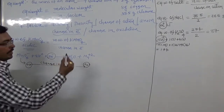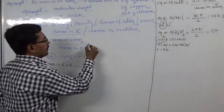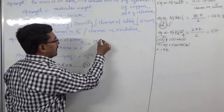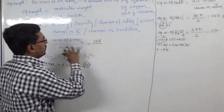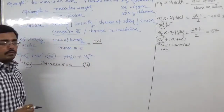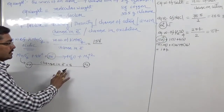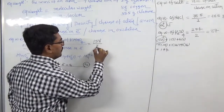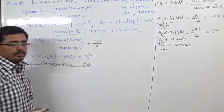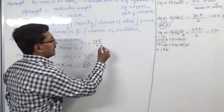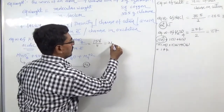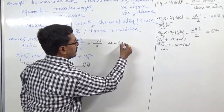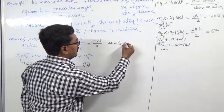Molecular weight of KMnO₄ is 158. Change in electron in acidic medium is 5. So 158 divided by 5 gives an equivalent weight of KMnO₄ of 31.6 gram equivalent.